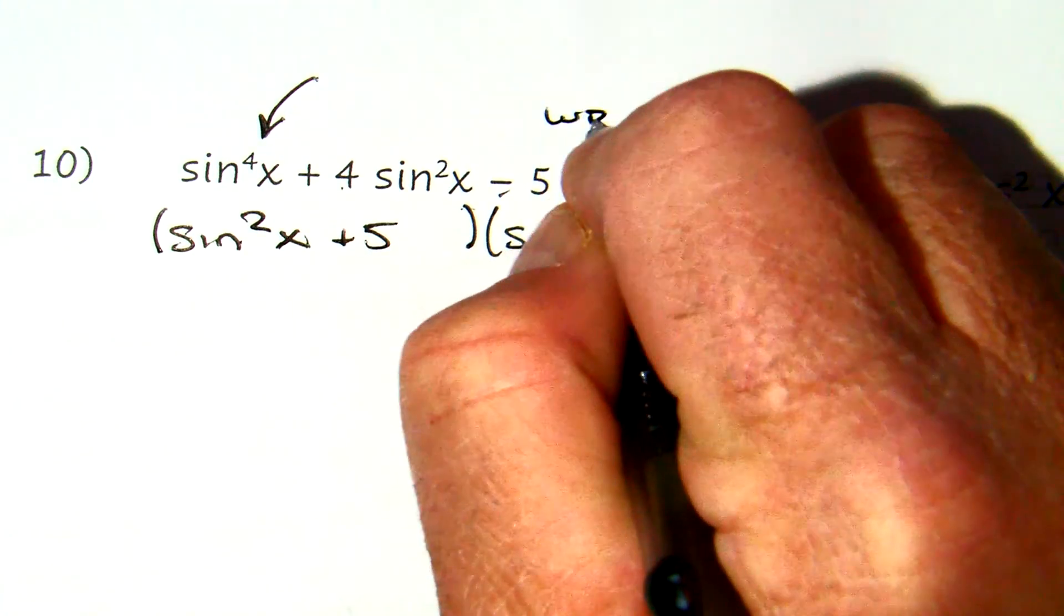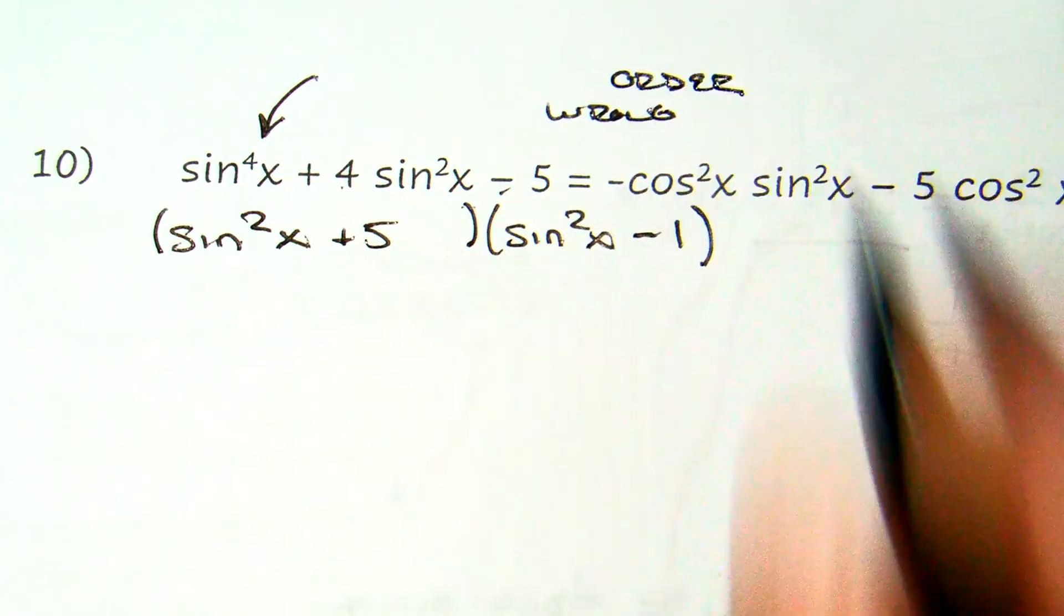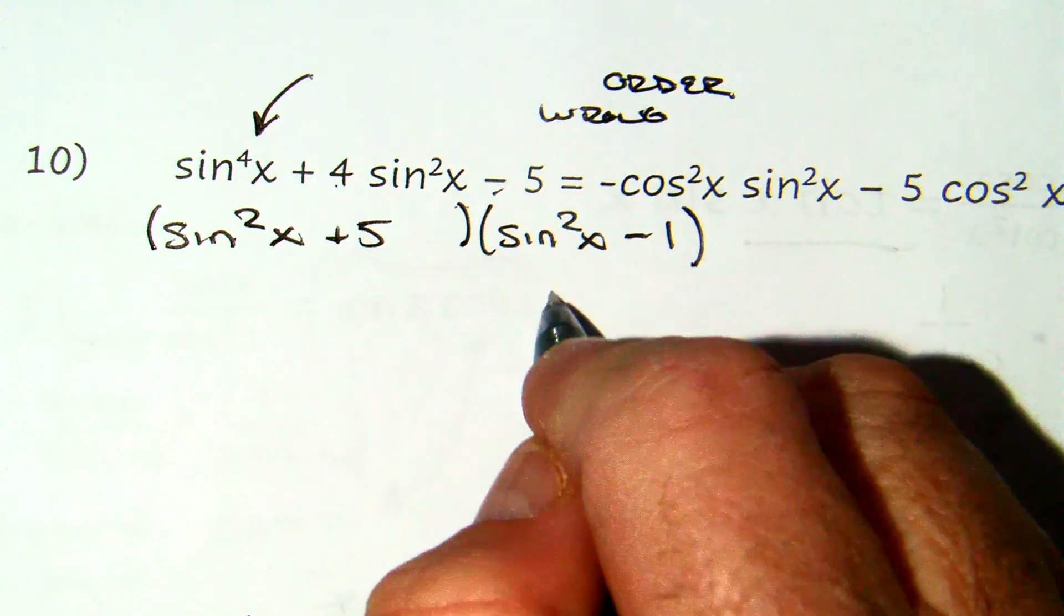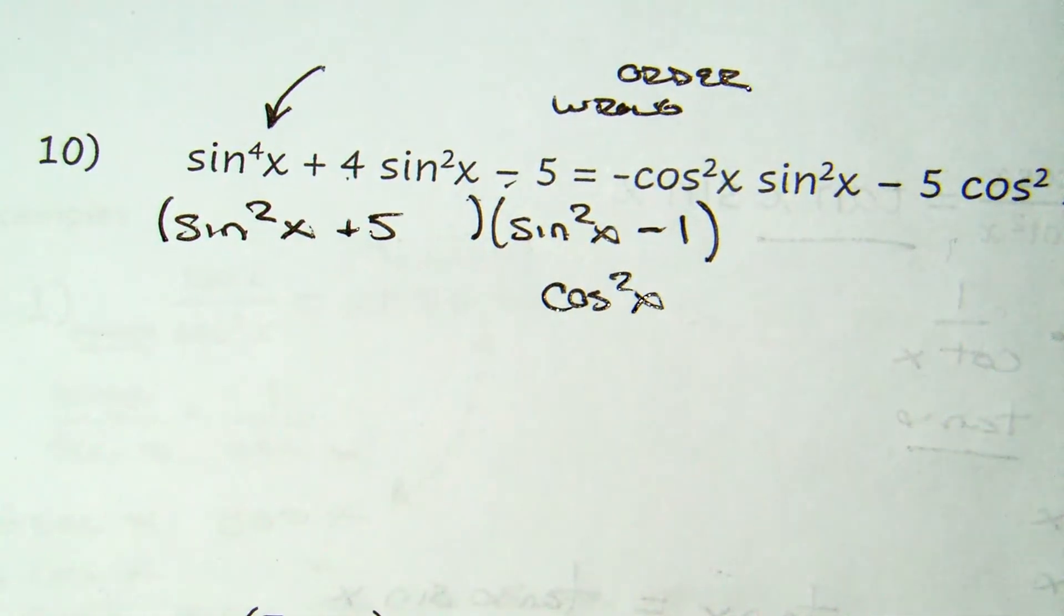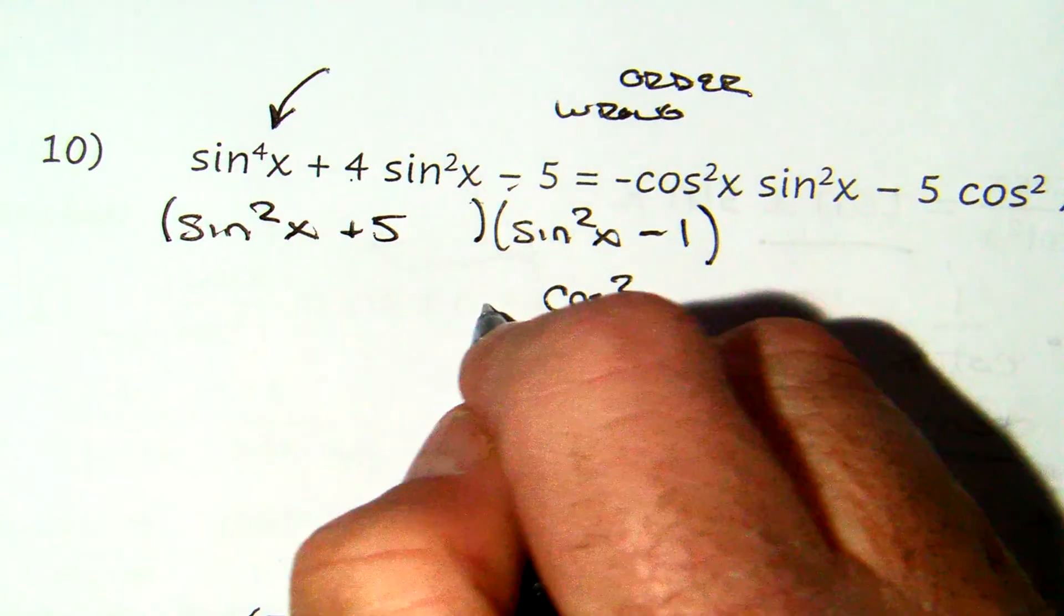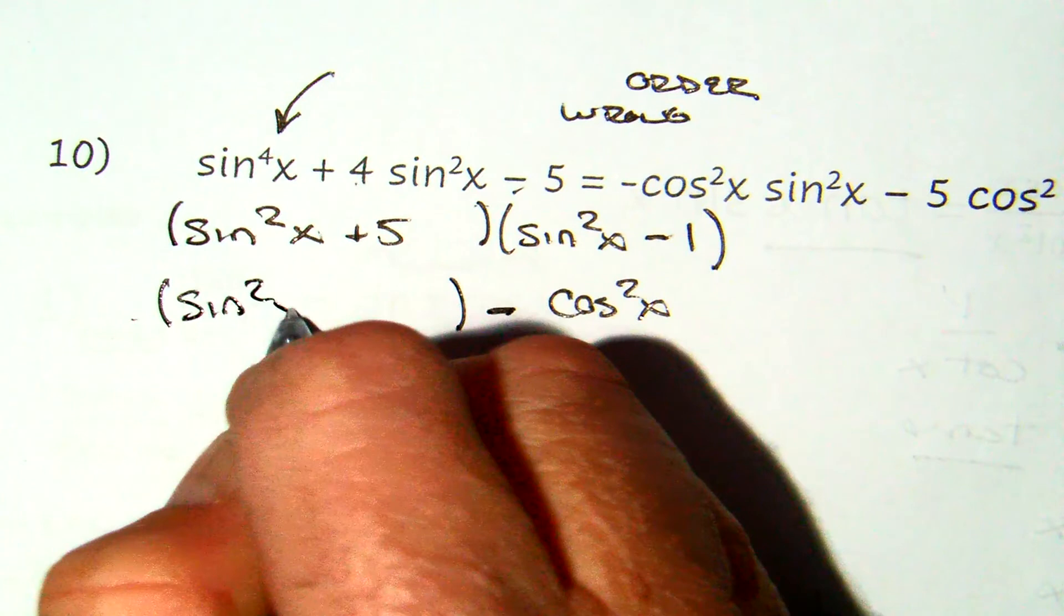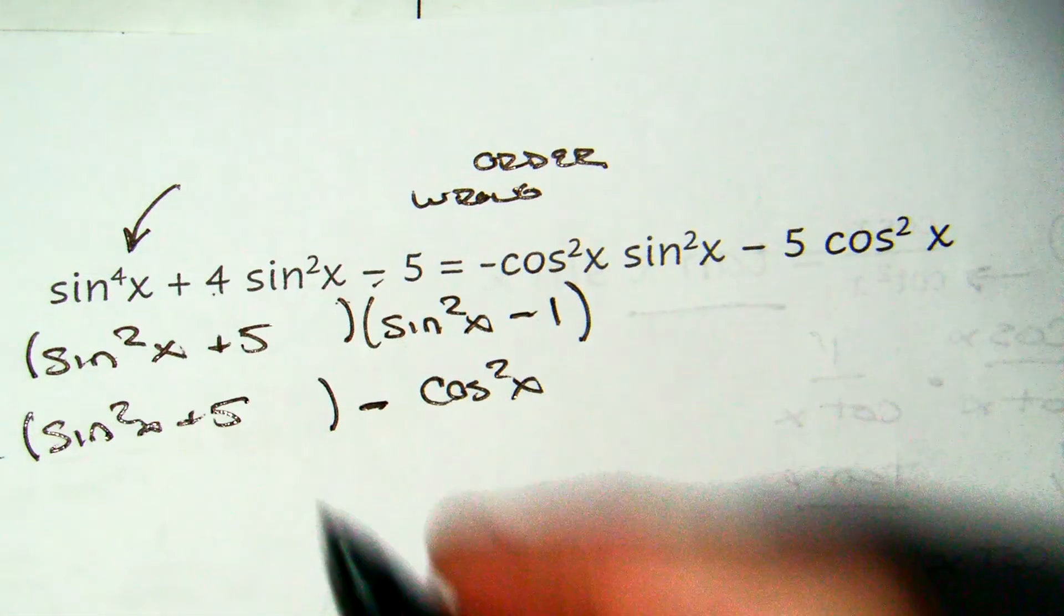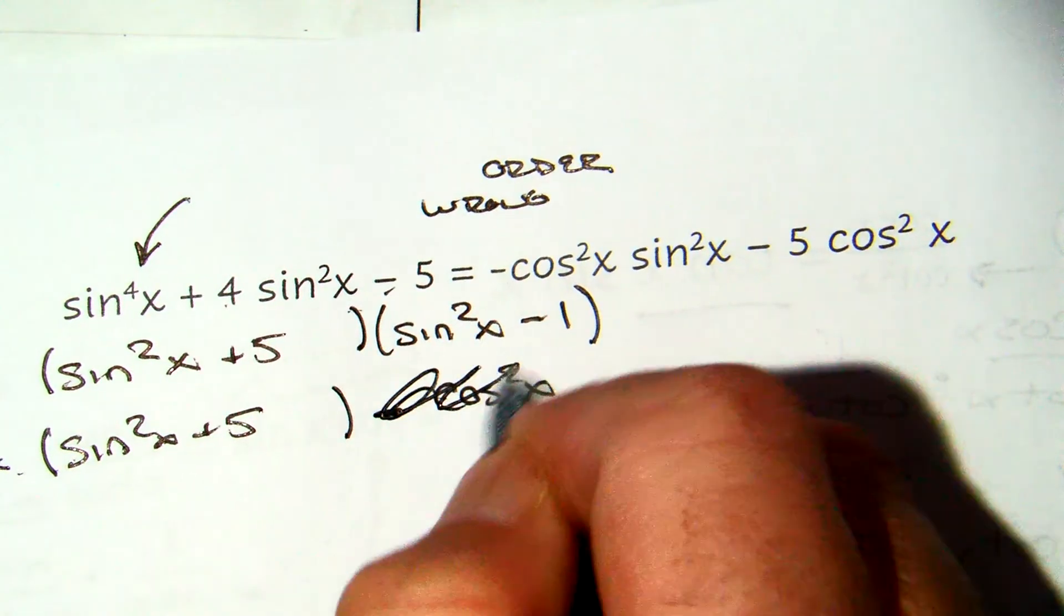By now, hopefully you realize sin²x - 1 is in the wrong order. In other words, if it was 1 - sin²x, it would be cos²x. It's not a big deal—it's still cos²x, but what do I put smack dab in the front of it because of that negative? Good. And I'm still multiplying by sin²x + 5.